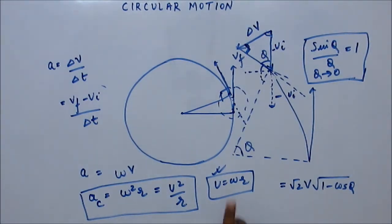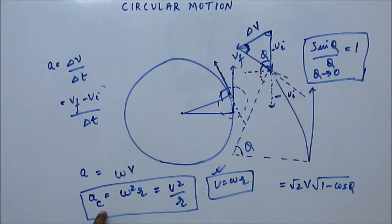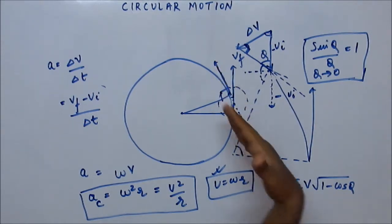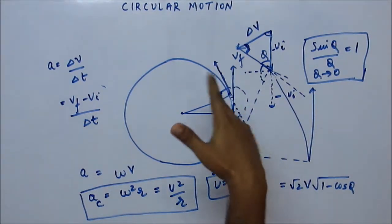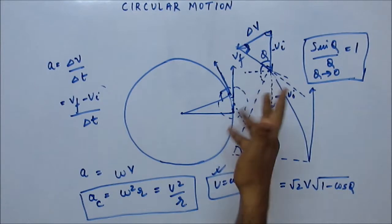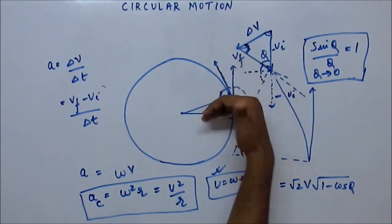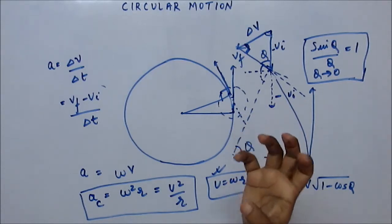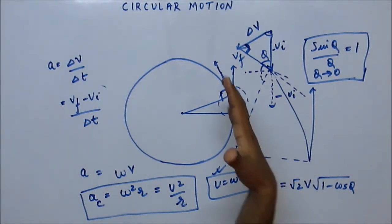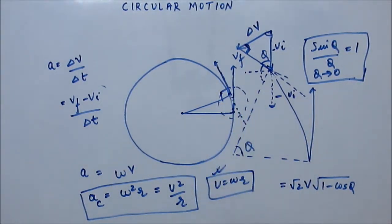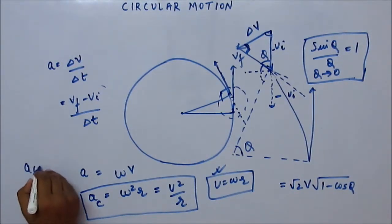First important relation, second important relation: centripetal acceleration is v²/r. Apart from this, you could have tangential acceleration that will increase the speed, and that will always be along the tangent — perpendicular to the radius — so it has no component along the radius. It is purely utilized to increase the speed of the particle.